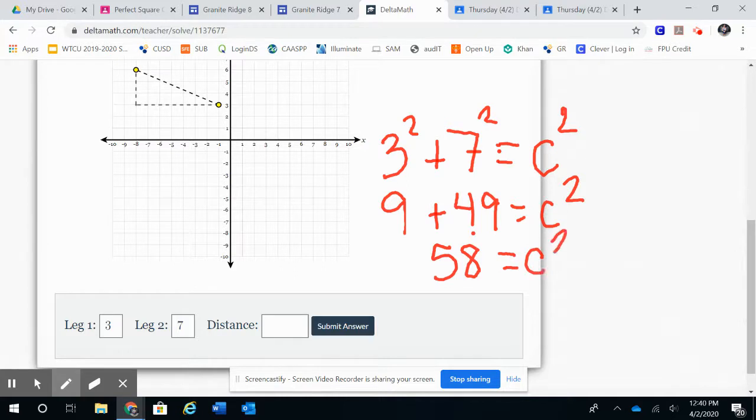To find out the distance or that c value, I have to take the square root of both sides. The square root of 58 is rounded to seven point six. I'm using a calculator to find that out.